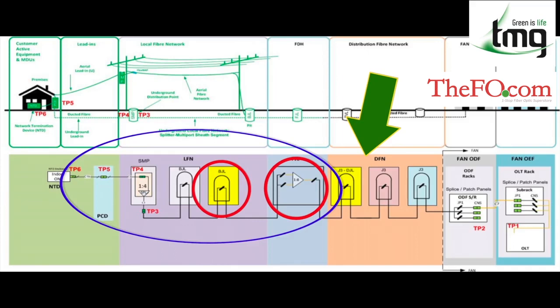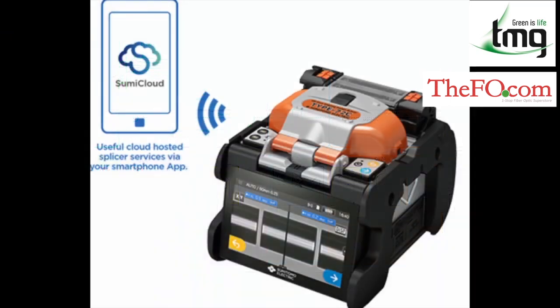But it's much slower with a greater chance of not splicing correctly. So with the main rationale to get the local fiber network completed in time, it's best to use a core alignment splicer to make sure you splice quickly with no defects.